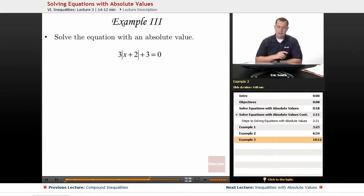So we'll start off by trying to isolate that absolute value. I'm going to subtract 3 from both sides. Now to get rid of that 3 out in front of the absolute value, let's divide both sides by 3.